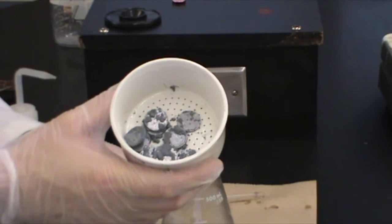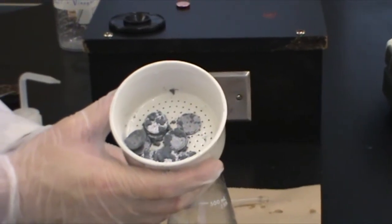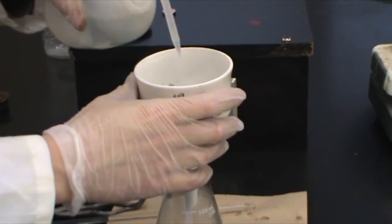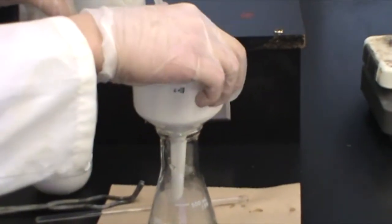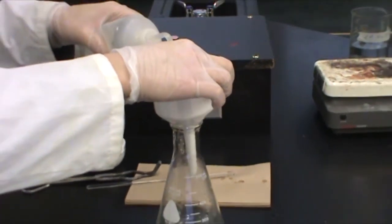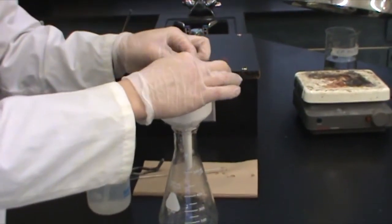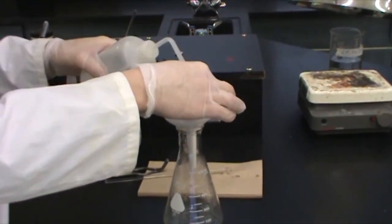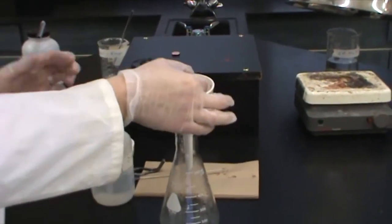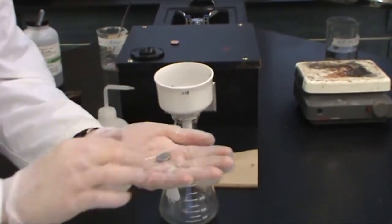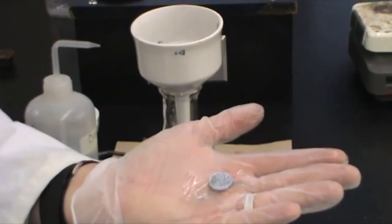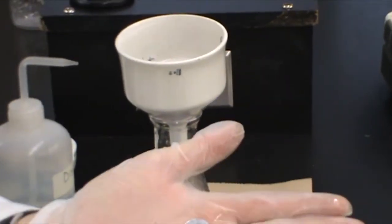Now we'll wash the excess zinc off the pennies. As you can see, the zinc coating makes the pennies look silver.